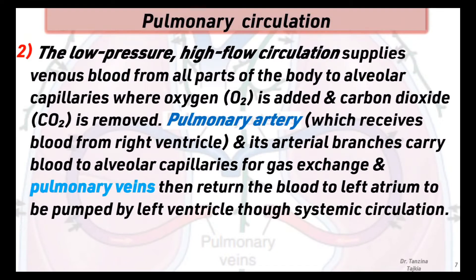Second, a low pressure, high flow circulation supplies venous blood from all parts of the body to the alveolar capillaries, where oxygen is added and carbon dioxide is removed. The pulmonary artery and its arterial branches carry blood to the alveolar capillaries for gas exchange, and pulmonary veins return the blood to the left atrium to be pumped by the left ventricle through systemic circulation.